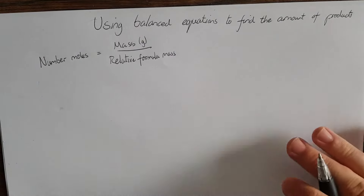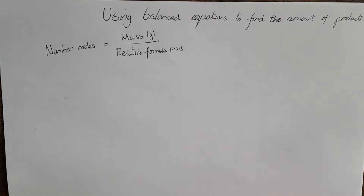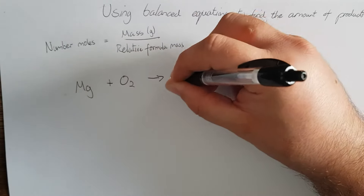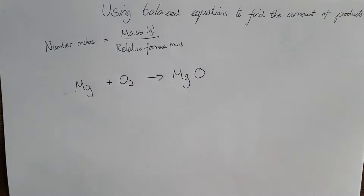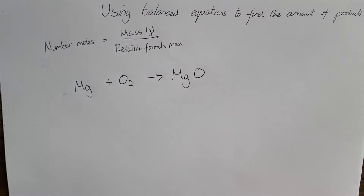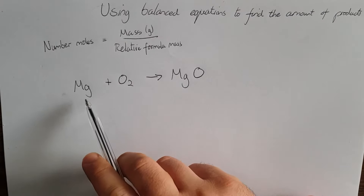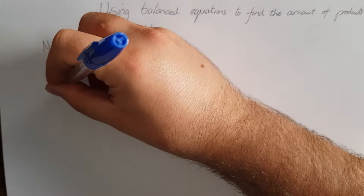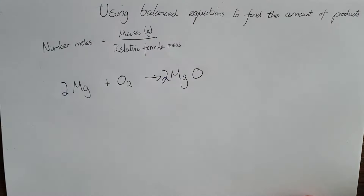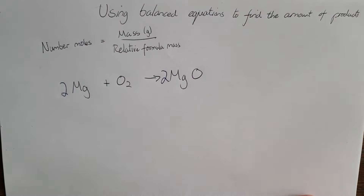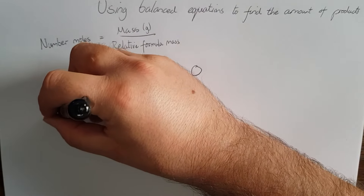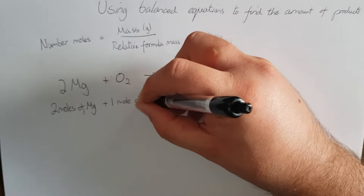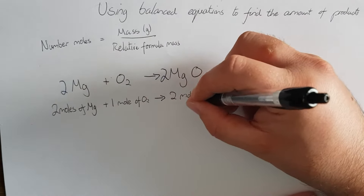We're going to look at what balanced equations actually mean. When we've balanced them, we say we've got the same number on each side. So if we look at this equation: magnesium plus oxygen makes magnesium oxide. You might remember we'd burn a strip of magnesium and it goes into a fine white powder — that's magnesium oxide. This equation isn't balanced, so I'm going to put a two in front of my magnesium and a two in front of my oxygen to get magnesium oxide. What this tells me is that two moles of magnesium plus one mole of oxygen will give two moles of magnesium oxide.